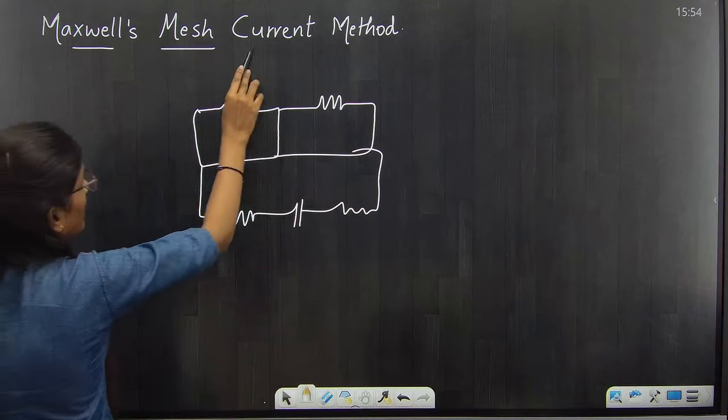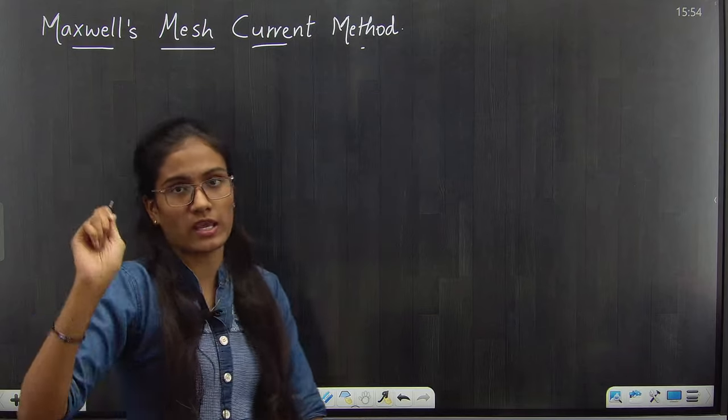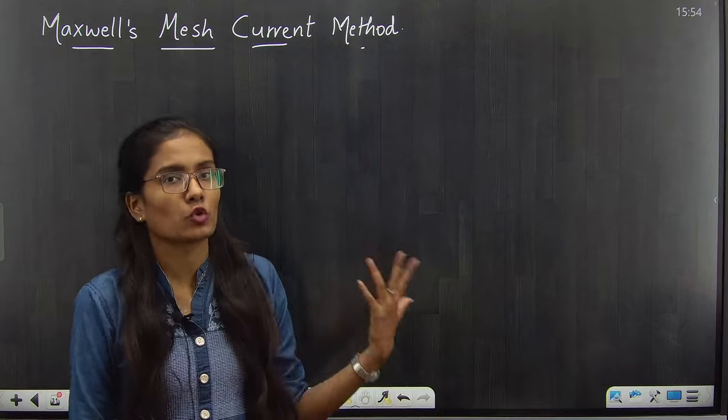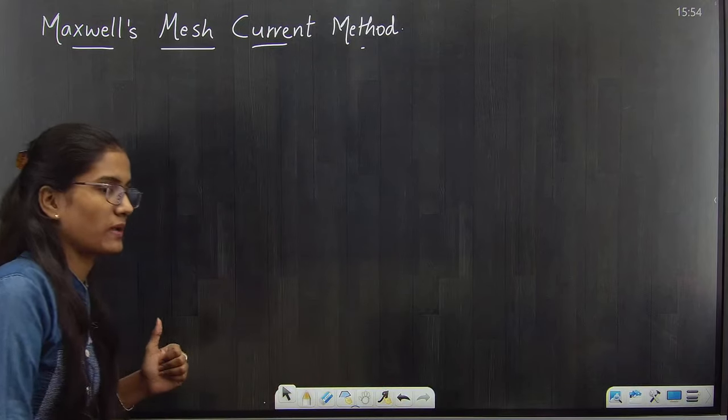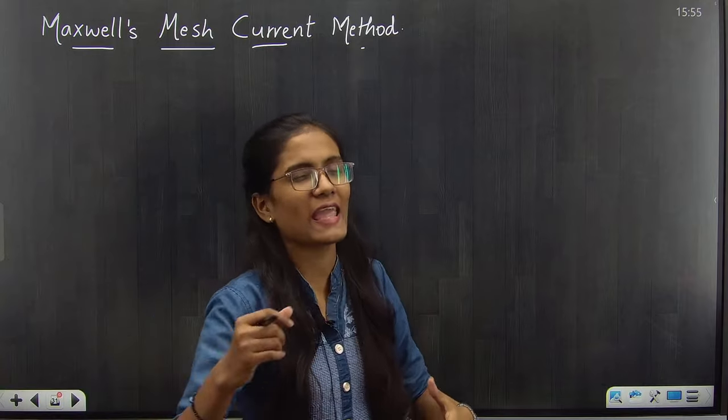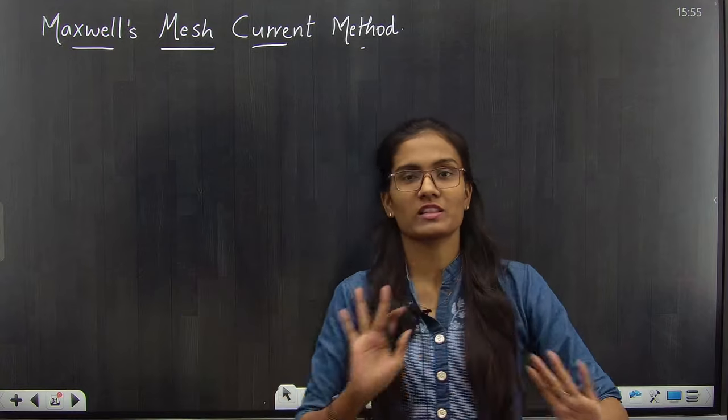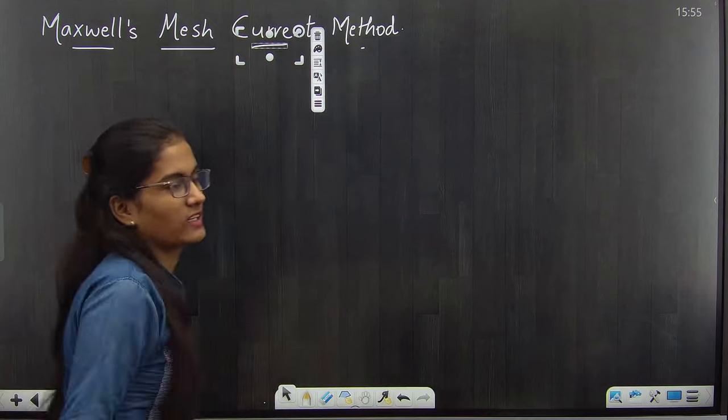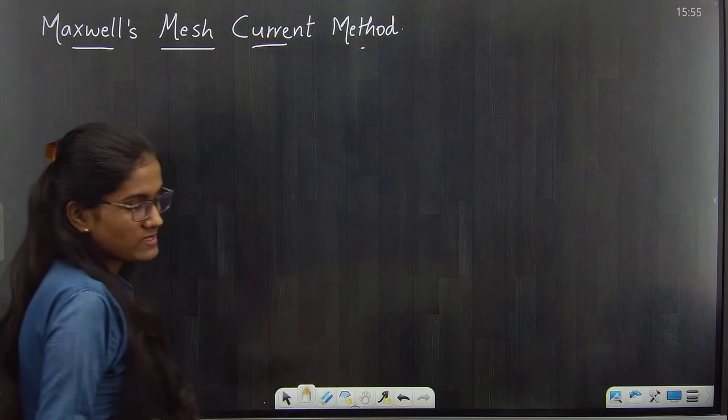In the Kirchhoff's law, we saw how we had to consider current direction, and we had to consider our sum very long. Sometimes we had to think about how to consider currents in such a complicated circuit. For this, we have another new method, that is known as Maxwell's Mesh Current Method.